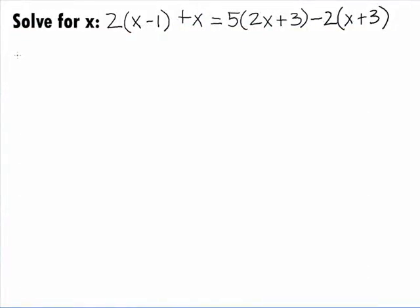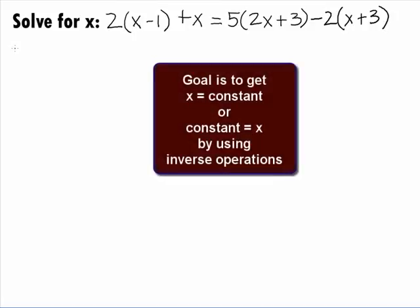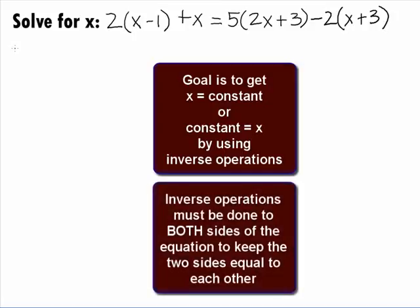In this example, we want to solve the equation 2 times the quantity x minus 1 plus x equals 5 times the quantity 2x plus 3 minus 2 times the quantity x plus 3 for x. The goal here is to get x by itself on one side and everything else on the other side using inverse operations. When we do the inverse operations, we want to make sure that we do the same thing to both sides in order to keep the two sides of the equation equal to each other.